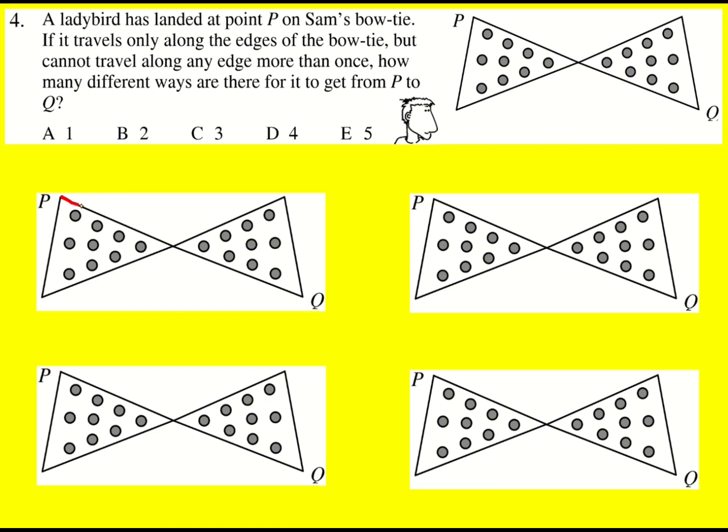So the ladybird could start at P and go along the top edge. Then remember, we never go along any edge more than once, so we're going to have to continue to go right. The ladybird could either go up and then down, or just continue going this direction here. So there's going to be two ways if the ladybird goes along the top edge to start with.